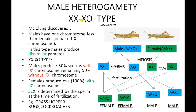Males have one chromosome less than females, specifically the sex chromosome — an unpaired X chromosome is present in males. That is why males are odd in number and females are even-numbered. Males produce 50% of sperms with the X chromosome and 50% of sperms without the X chromosome. This is the karyotype of the male grasshopper: AA represents the diploid condition of autosomes, and X represents the sex chromosome — only one unpaired X chromosome is present in males.